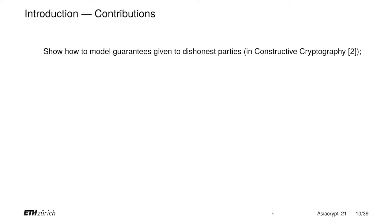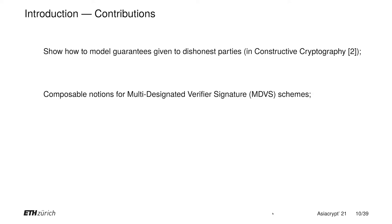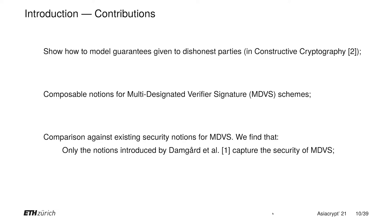In this paper, we show how to model guarantees given to dishonest parties in composable cryptography. In particular, we give the first composable notions capturing the security of multi-designated verifier signature schemes, or MDVS for short. Finally, we compare our composable notions against existing game-based security notions for MDVS, and we find that only recently the notions introduced by Damgård actually captured the security of MDVS. Furthermore, these notions are still strictly stronger than our composable notions.